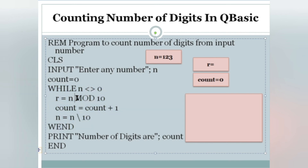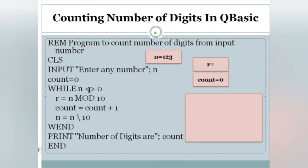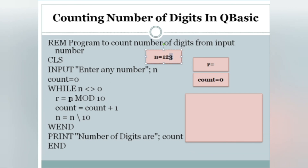If you don't know how while loop works, watch the previous video. The condition is: WHILE N not equals to zero — meaning the loop executes until N becomes zero. First time, N is 123; 123 not equals to zero, so condition is true. It goes to the next line: R equals to N MOD 10. MOD gives you the remainder, and MOD 10 gives you the last digit — so 123 MOD 10 gives remainder 3, so R equals 3.